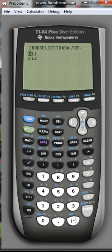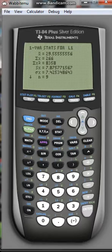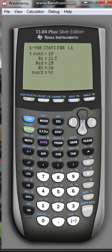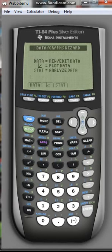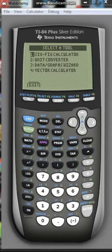It'll also analyze data. I can choose from either of my lists. I'll choose list one. It will show you all these values like the largest x value, the smallest x value, the median x value. Those are the important things to know from the data/graphs wizard.